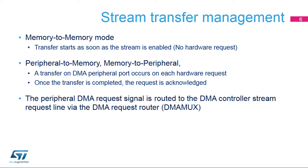Once the stream is configured and enabled, the transfer starts immediately. When data is transferred to or from a peripheral, the hardware request coming from the selected peripheral is used to trigger the data transfer on the DMA peripheral port. Once the transfer is completed, the request is acknowledged.